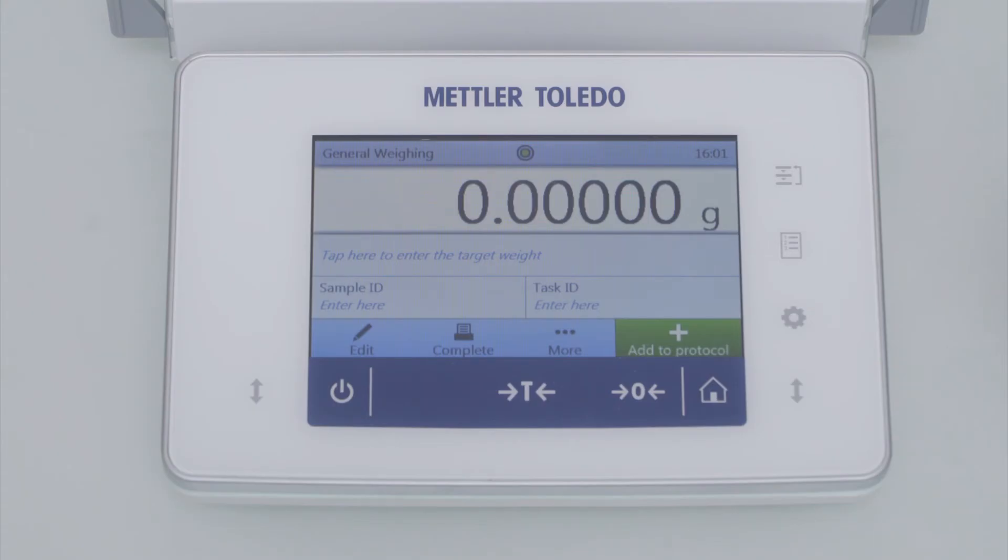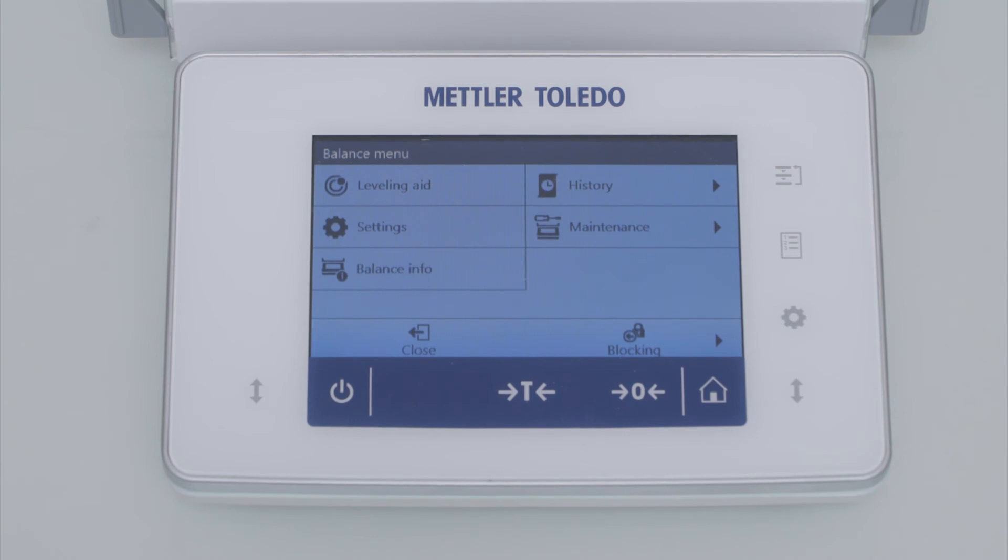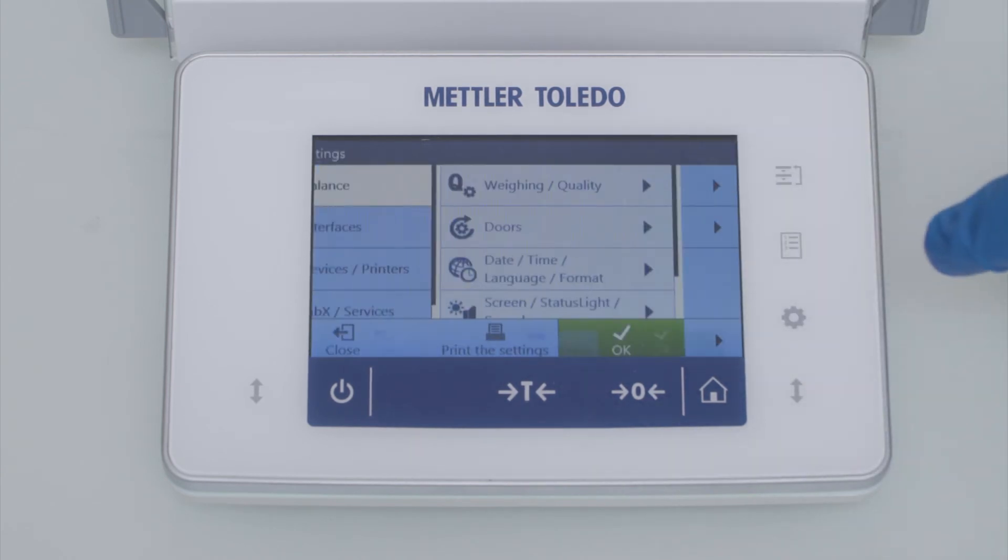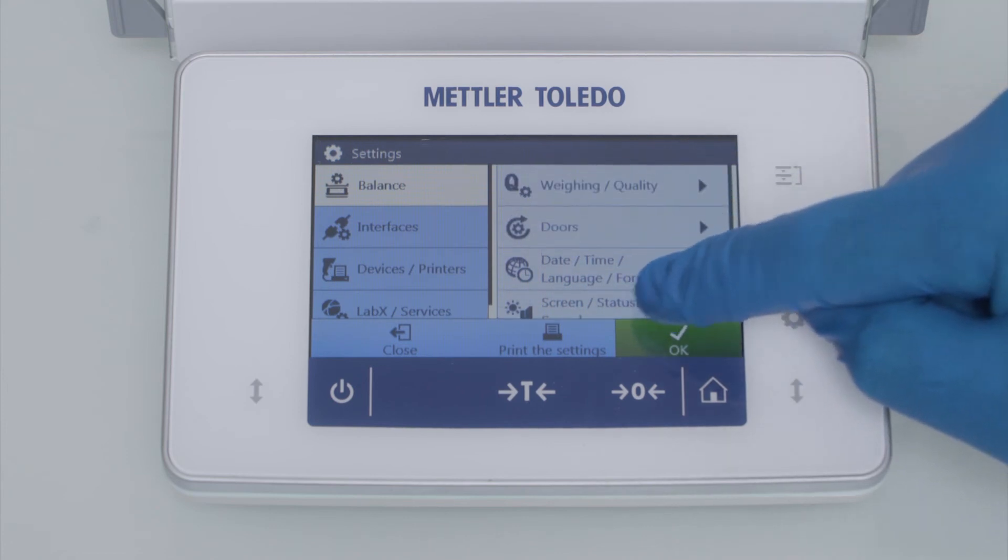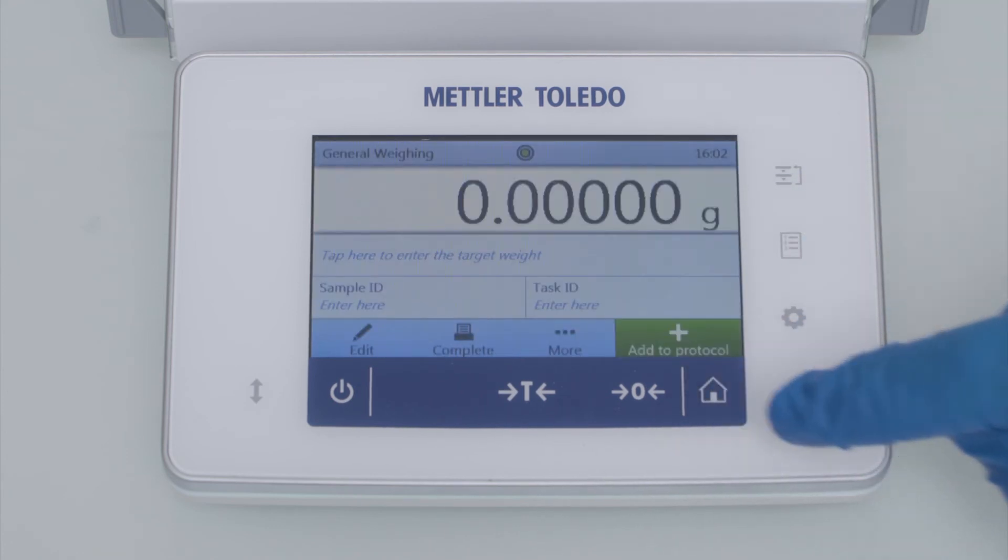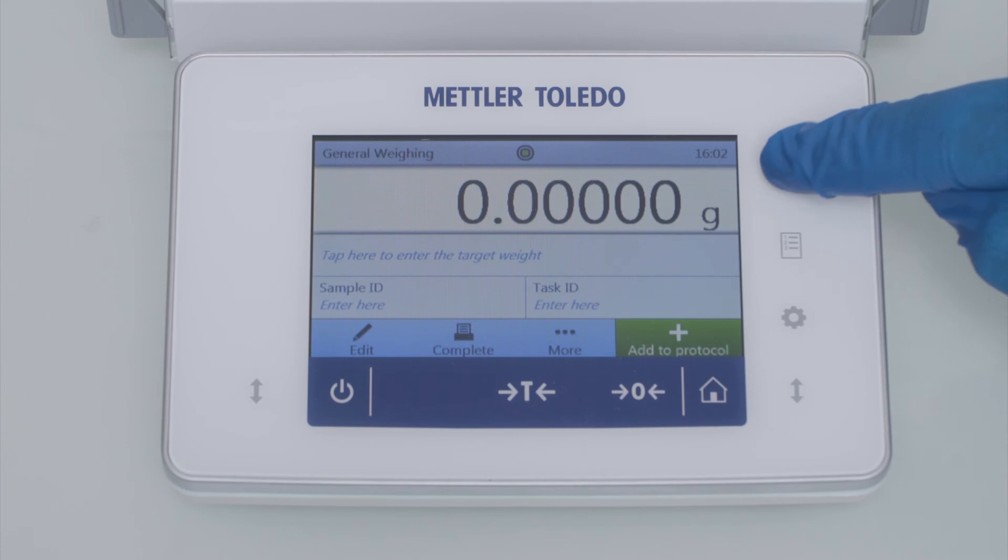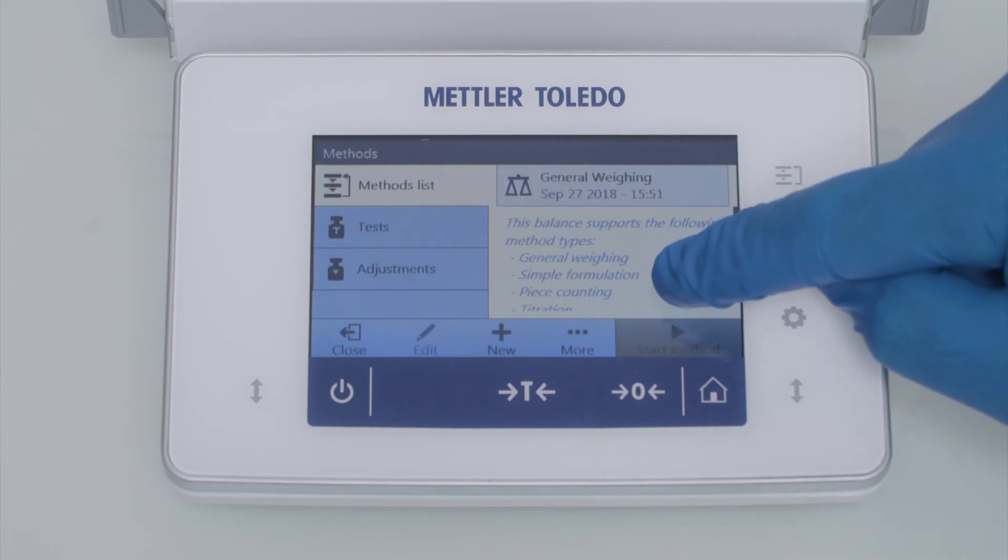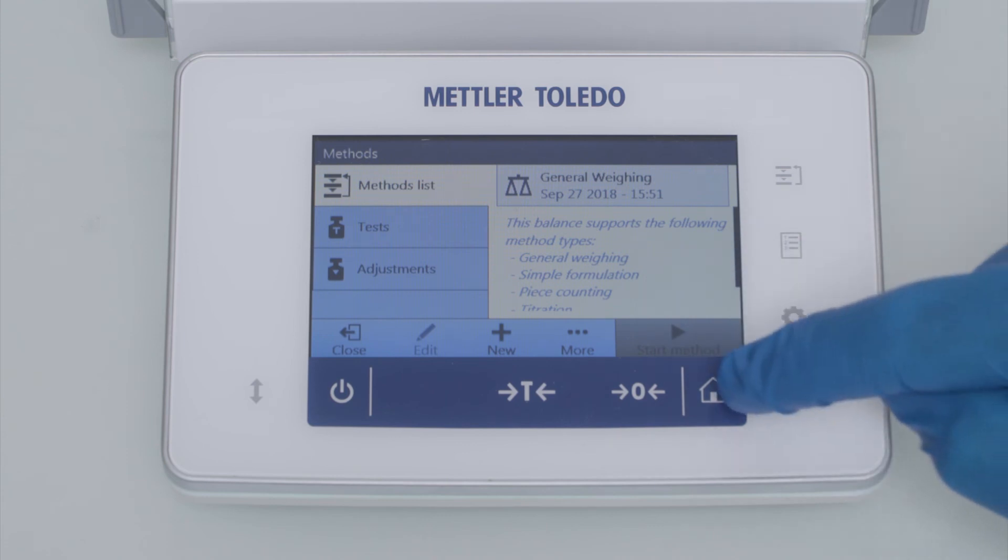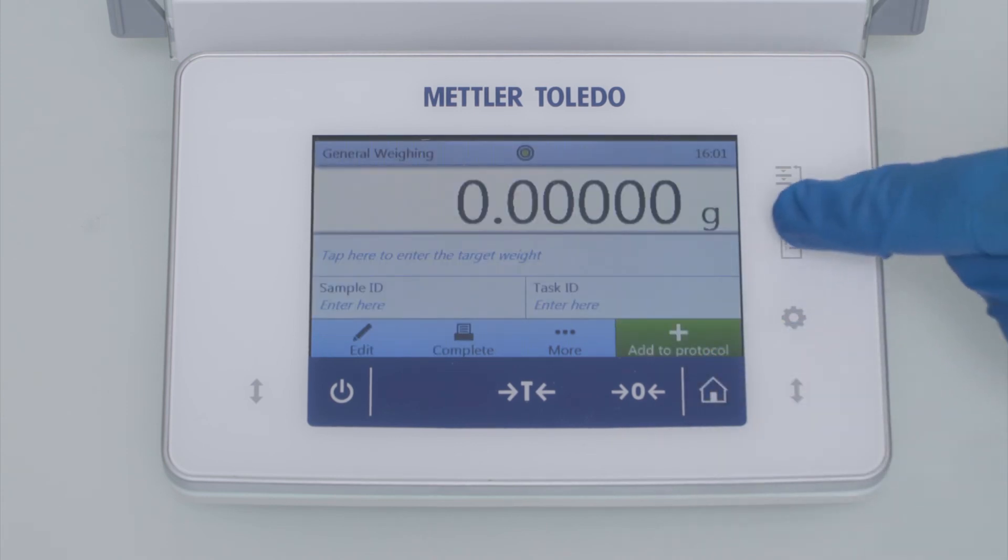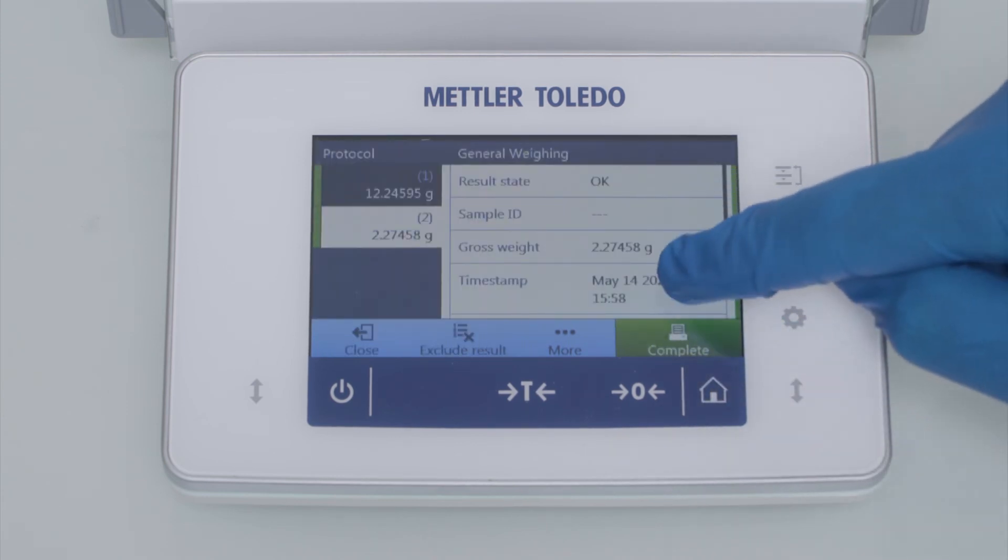The user interface is logically structured. You find the settings and configuration section on the left side by pushing this button here. All methods such as formulation and its specific settings can be accessed by pushing here. Finally, the results and all related information are summarized in the result notepad on the right.